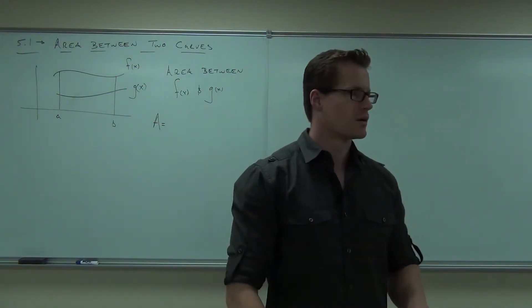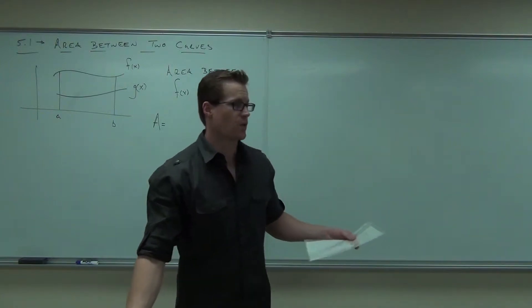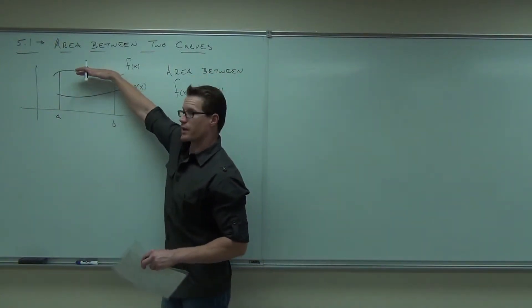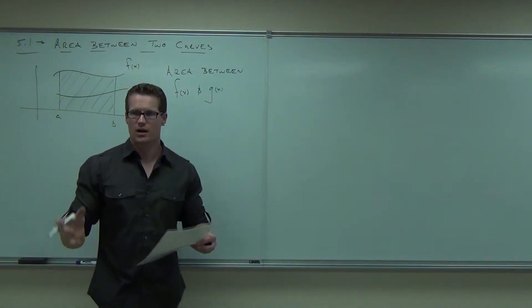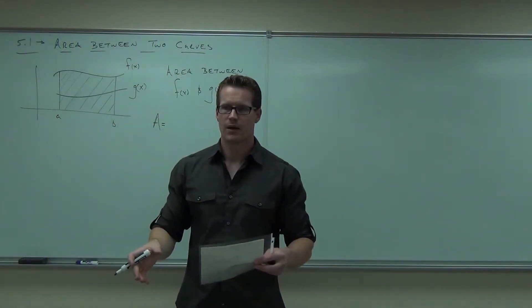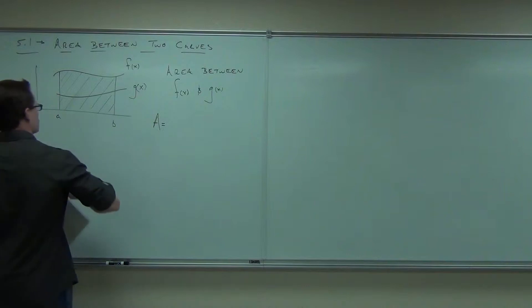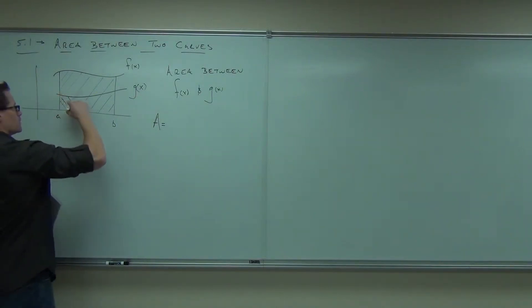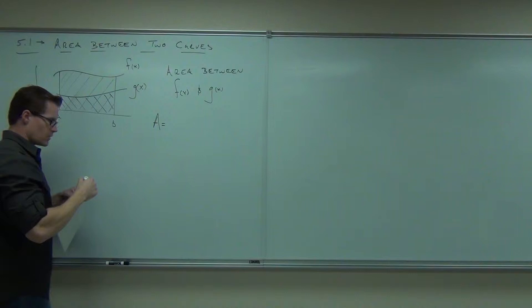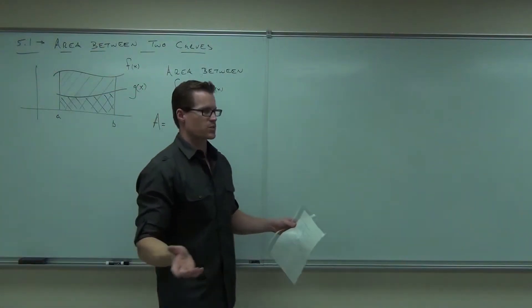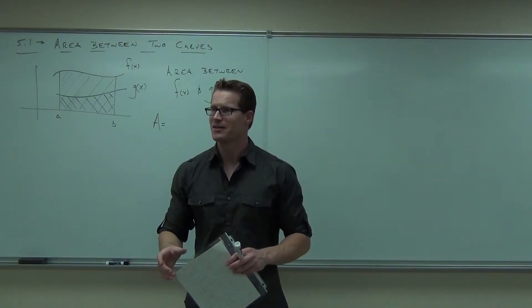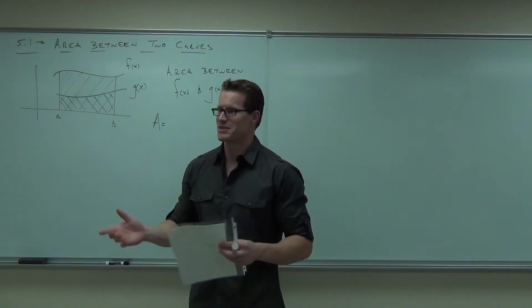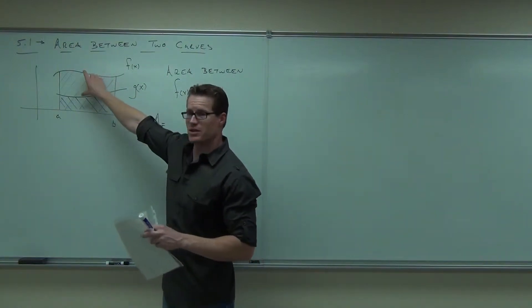Find the area of f of x and then subtract the area of g of x. That might seem logical, right? Because we have this whole area. That's great. That's the area under f of x, true? And this area, which is g of x. Oh, shoot. If I subtract them, aren't I going to get? Aren't I going to get?